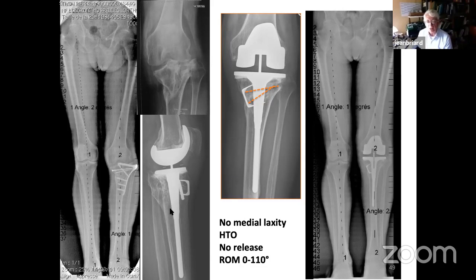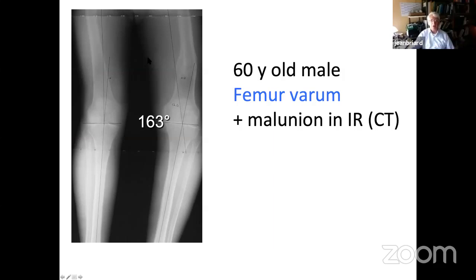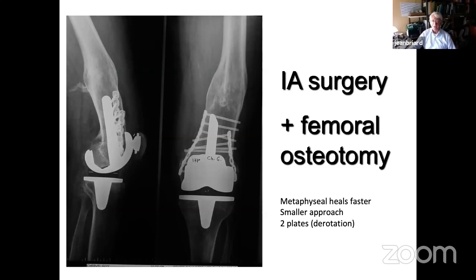Another case: a surgeon patient with a knee that was not corrected medially. He was stable, so an HTO open wedge was performed with no release — he achieved 110 degrees of flexion. A rare case with tibia varum and internal malrotation requiring osteotomy and rotation correction. For a femur varum case with malunion in the transverse plane and internal rotation — gait was very poor. After trauma, always request CT to check for rotation. A metaphyseal osteotomy was performed using two plates — no malunion resulted from surgery.